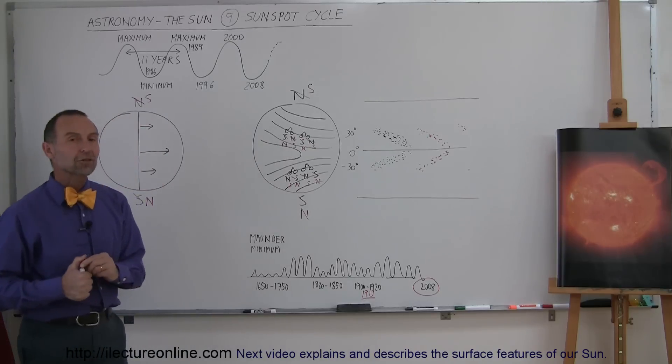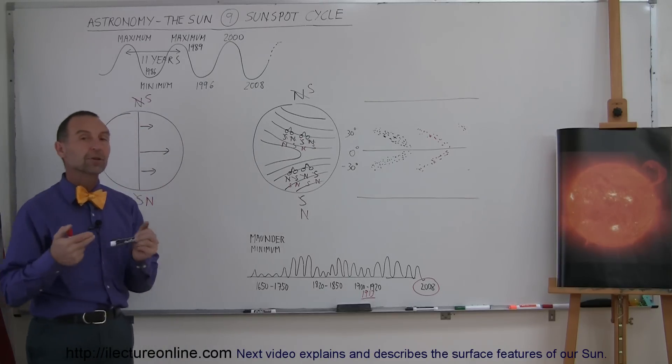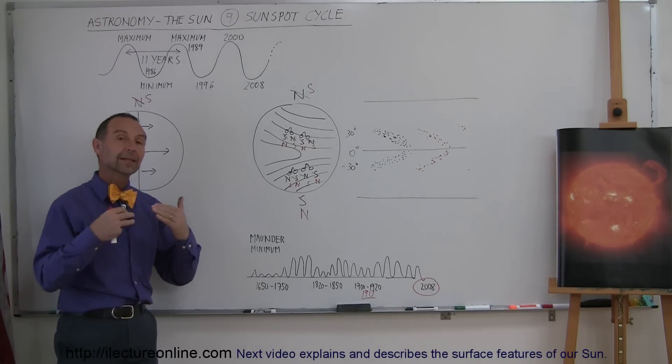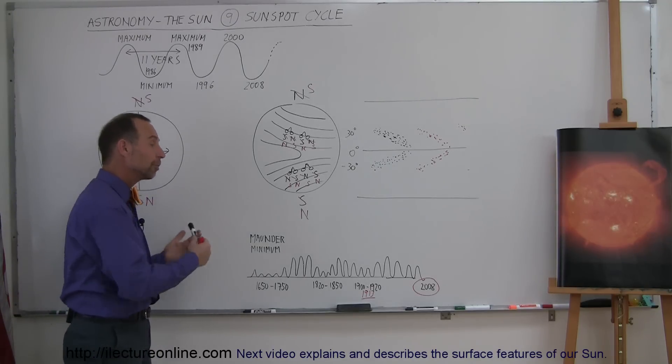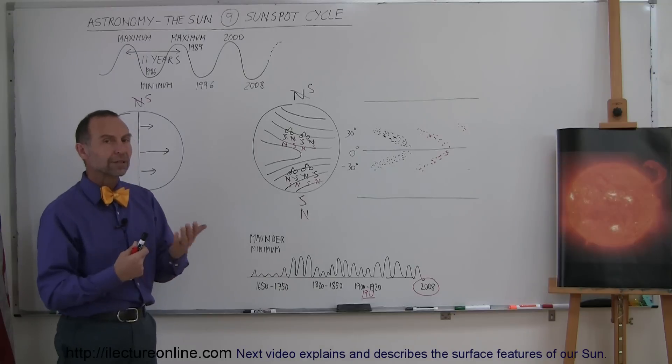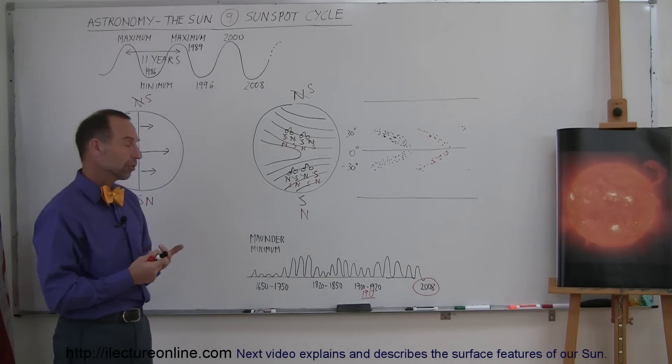So, is there some connection to the number of sunspots and what happens on the Earth? And there seems to be a belief that there is a correlation between the climate on the Earth and the number of sunspots, because the number of sunspots on the sun does correlate with the amount of solar activity and perhaps with the amount of energy that we receive from the sun.